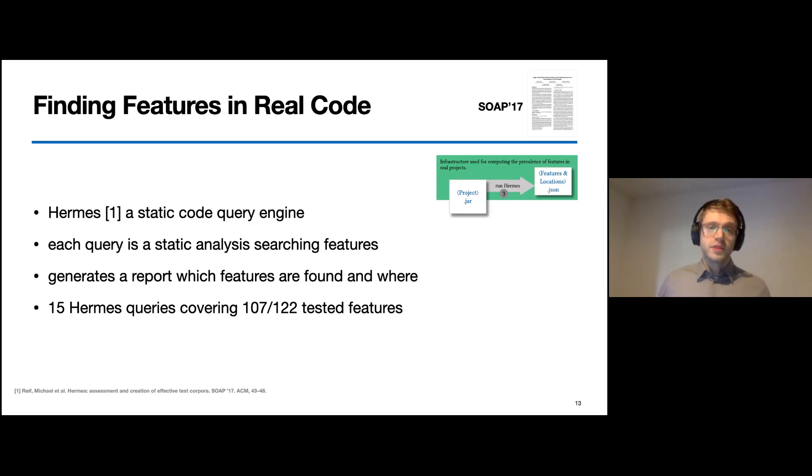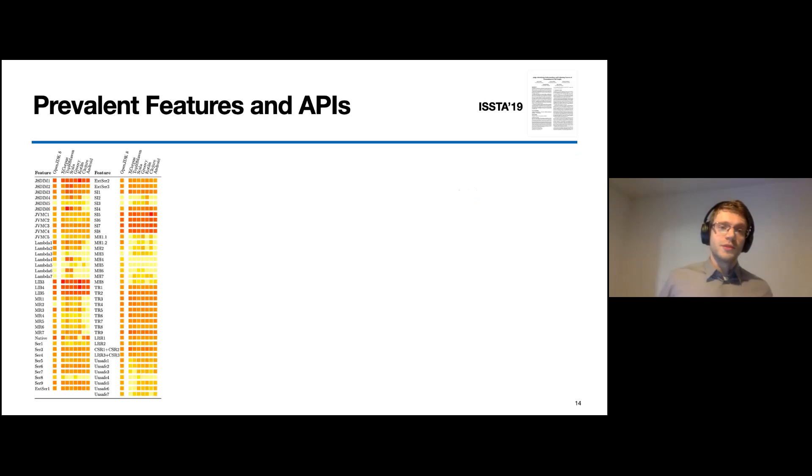Now, the next obvious step is to apply all those queries to several corpora. Here, we used the DaCapo corpus, which is an established corpus, and also several hand-picked corpora consisting of real-world projects from Java, Scala, Ruby, Kotlin, Clojure, and also Android apps. Additionally, we took the top 50 most popular libraries from Maven Central to study how the features we identified are prevalent in those programs.